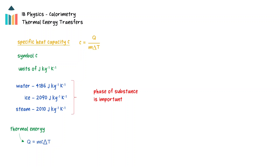In the formula q equals mc delta T: q is the energy transferred, m is the mass of the object, c is the specific heat capacity, and delta T is the change in temperature in units of Kelvin or Celsius.